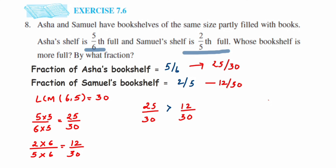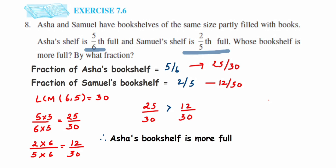This means Asha's bookshelf is filled more compared to Samuel's bookshelf. That's the conclusion for the first part of the question: Asha's bookshelf is more full as compared to Samuel's bookshelf. Now we have one more part of the question.